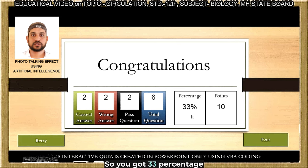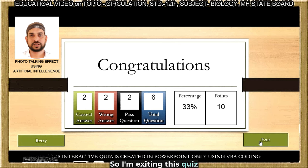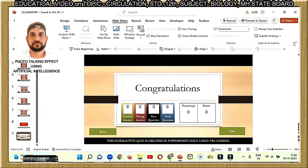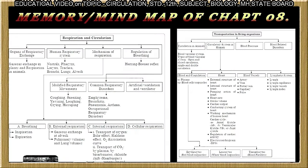We will click here to see your results. You gave two correct answers, two wrong answers, and two pass questions out of six questions. You got 33 percent and 10 points. Now study these mind maps and solve the homework.